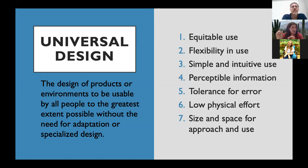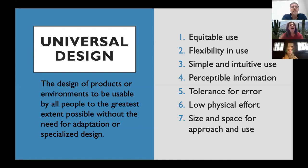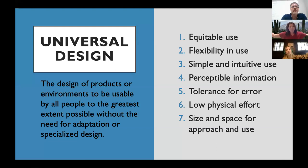Sixth is low physical effort. This is really relevant to events and conferences where people are negotiating space. How large is the room? Is there a lot of walking back and forth, pushing across hotel carpet? Are there heavy doors? What are the ways we can minimize physical effort? Disability is not always visible, and we should not expect participants to disclose every unique characteristic so we can plan accordingly — that's the beauty of universal design.